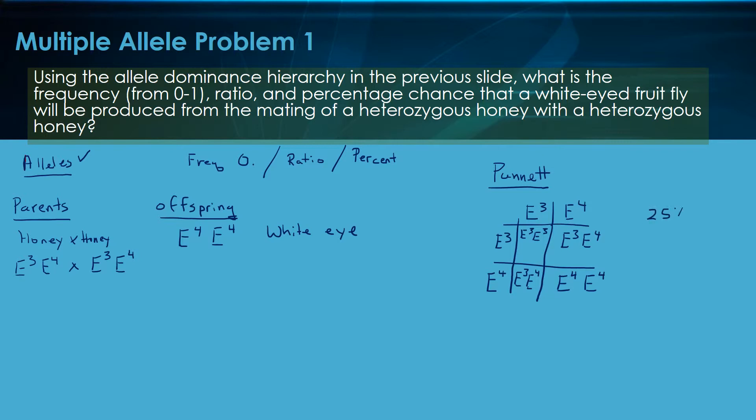That is one of our answers in percentage. The percentage is kind of easiest. 25% offspring white-eyed.